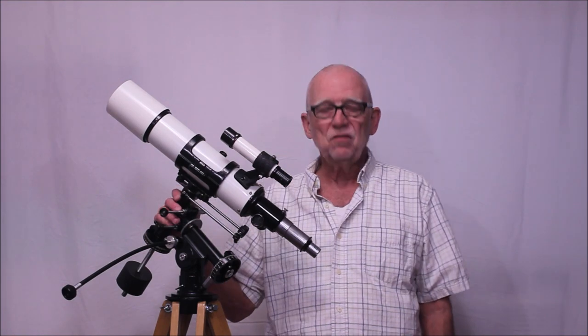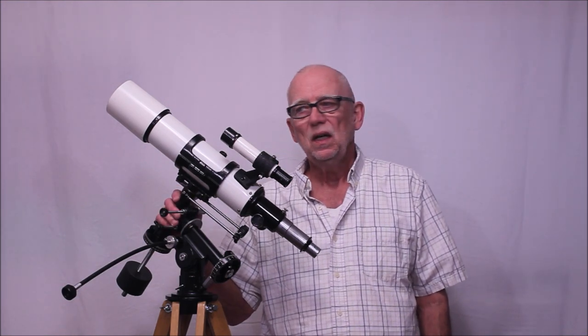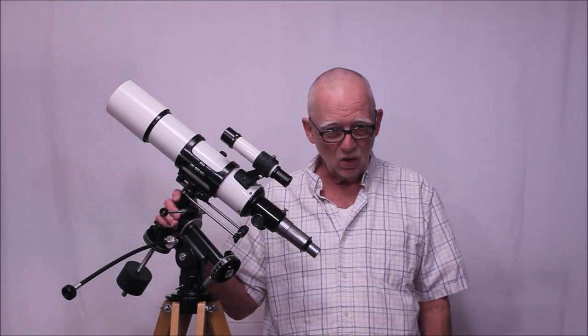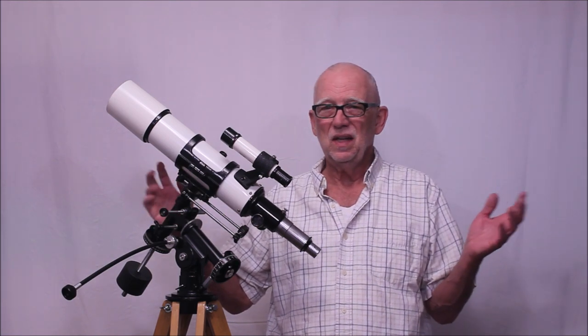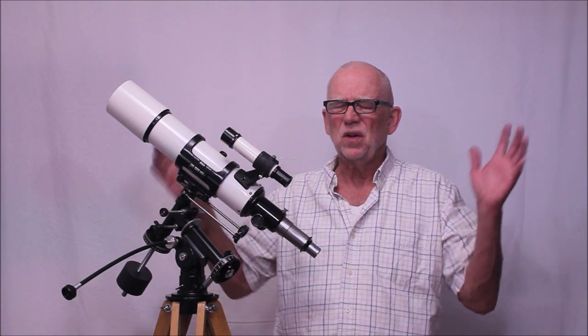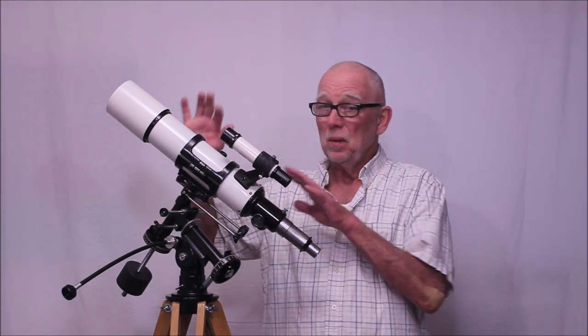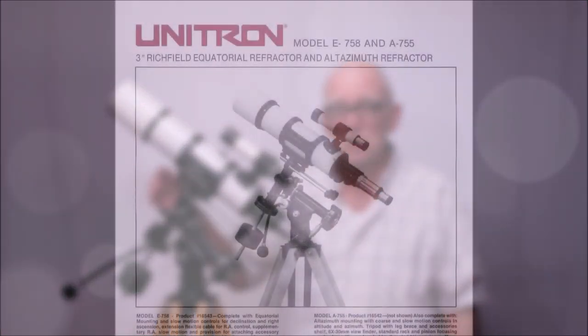Here's a picture of an ad for the E758. You'll notice that it's also got a companion, the A755. The number designation is very confusing because it's apparently the same scope just on an Altaz mount.